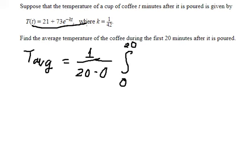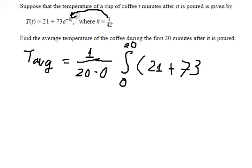We have a function in here. We have k equal to 1 over 42, so we put this number to replace for k, and we put dt.